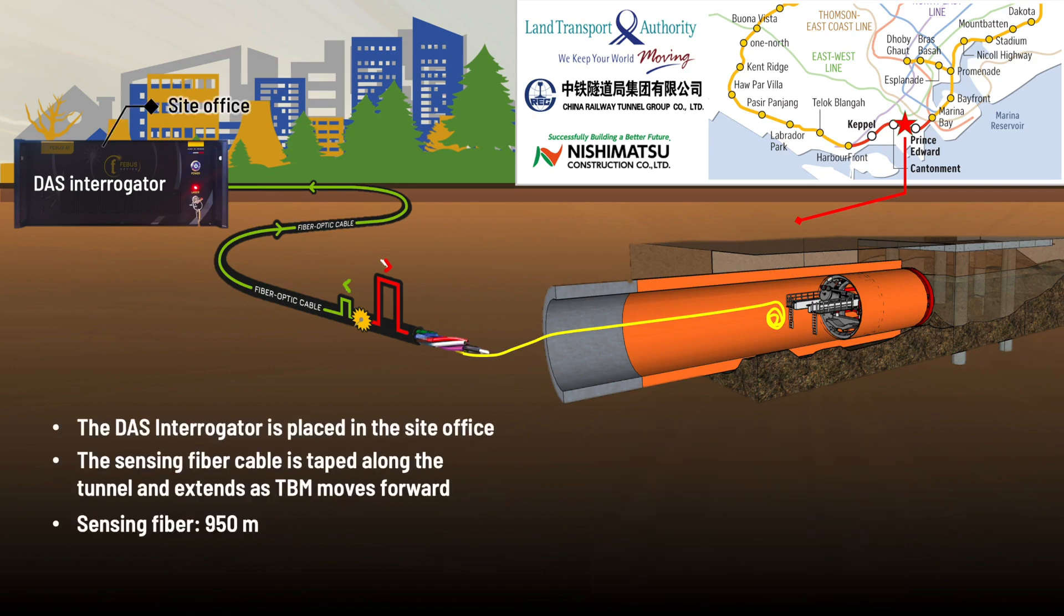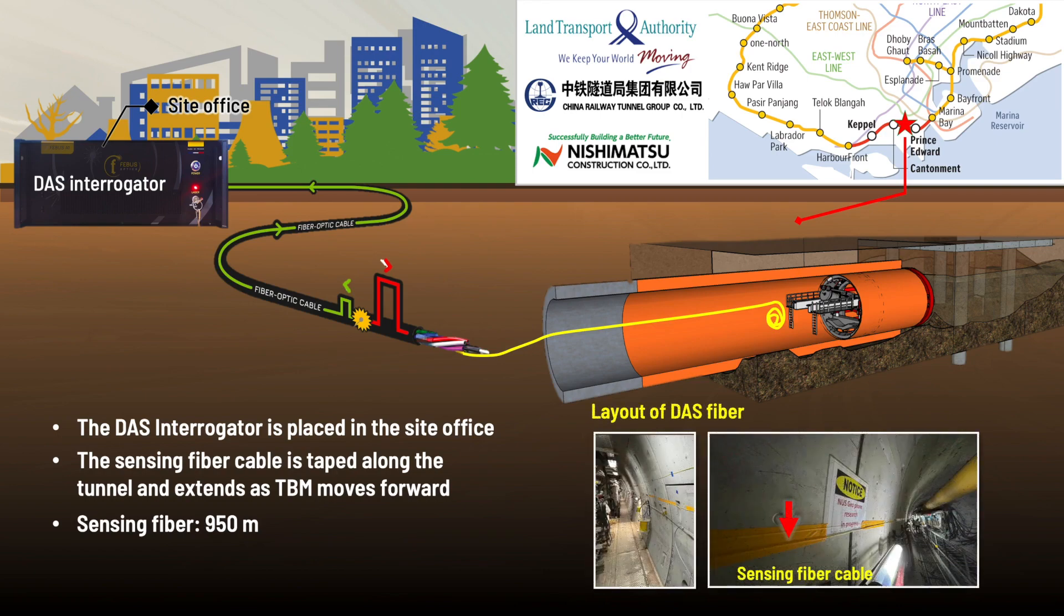The DAS interrogator is placed in the site office and plugged in with a piece of backup communication fiber cable, connecting the site office with the underground TBM control room. The 950-meter sensing cable is then connected from the control room and tapped to the tunnel wall. The sensing fiber cable extends as the TBM moves forward.